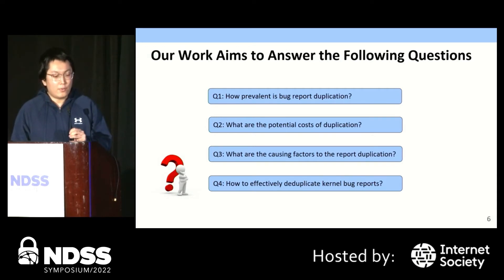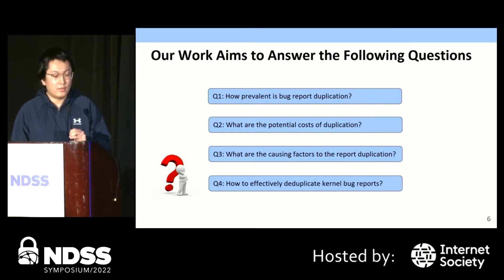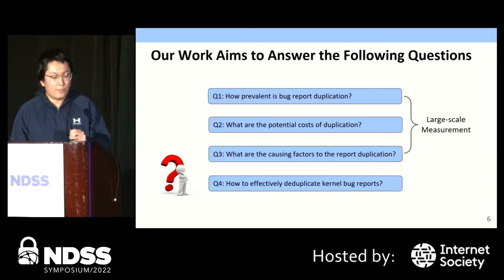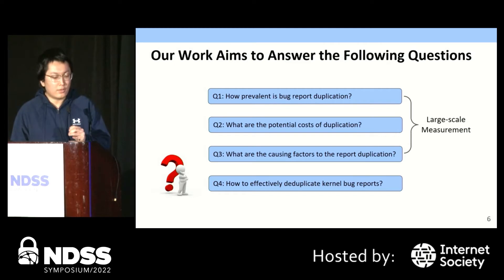To fully understand the problem of bug report duplication and design solutions, in this work we seek to answer the following questions: First, how prevalent is bug report duplication? Second, what are the potential costs of duplication? Third, what causes report duplication? And finally, how to effectively deduplicate bug reports? To answer the first three questions, we conduct a large-scale measurement of duplicate reports in the Linux kernel. Based on our measurement results and discoveries, we propose new strategies to deduplicate kernel reports. Our evaluation shows that our strategies are effective in the real world.